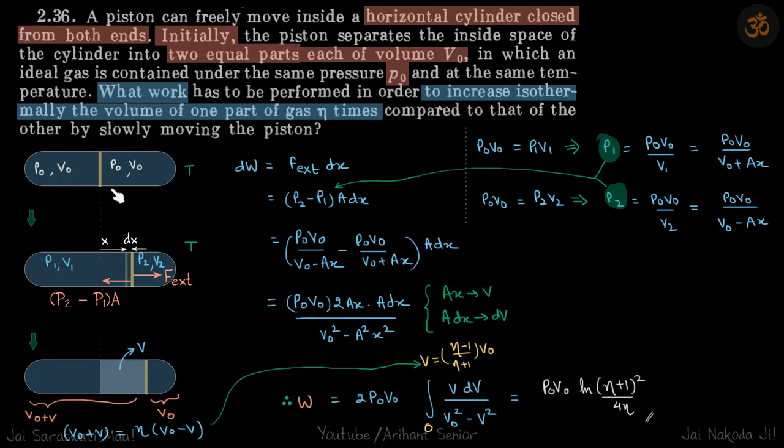Inside this cylindrical vessel we have a piston that divides the vessel in two equal parts. Now this piston is moved with an external force such that eventually the ratio of the two volumes that the piston divides is eta.